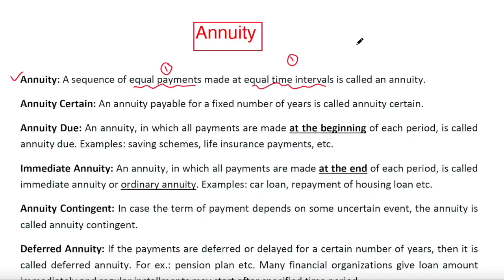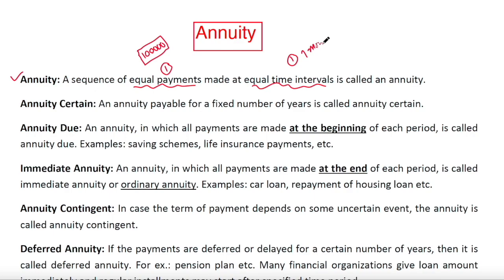For example, if you want to buy a flat from a company through monthly installments, you need to pay each month either at the beginning or at the end of each time period. In this case, the time period is one month and the installment is one lakh — so you pay one hundred thousand each month to the company. This is an example of an annuity.